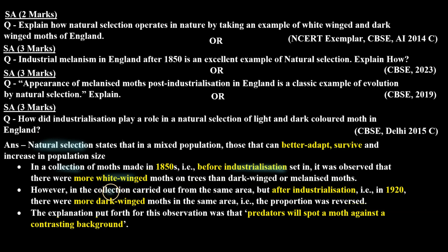After industrialization, pollution increased, and we know that lichen does not grow in polluted areas, so the lichen was lost. As a result, the tree bark became dark in color. Now the light-colored moths became easily visible, while the dark-colored moths could not be seen.